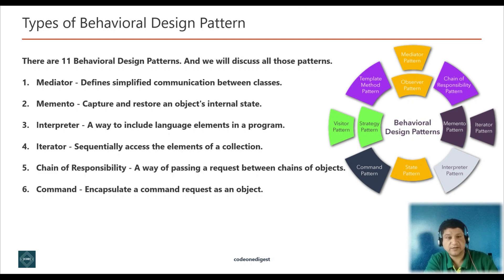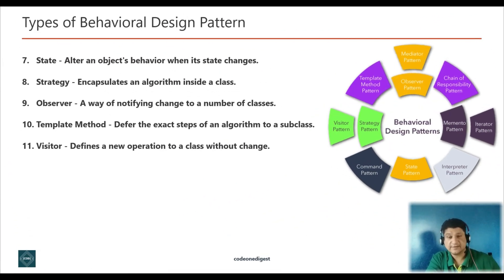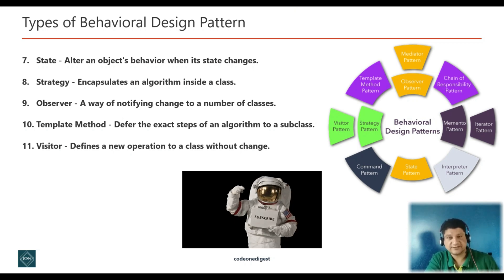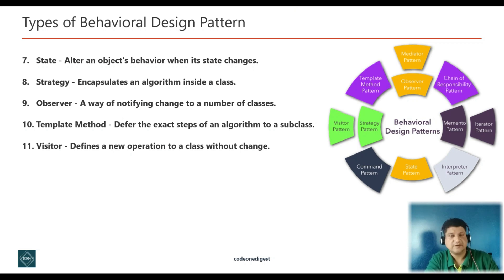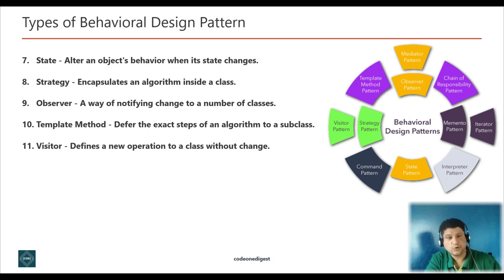Fifth is chain of responsibility, where it provides a way of passing a request between the chain of objects. Sixth is command design pattern, that encapsulates a command request as an object. Seventh is state design pattern — an object alters its behavior when its internal state changes. Eighth is strategy design pattern, where we encapsulate an algorithm inside a class. Ninth is observer design pattern, which provides a way of notifying a change to a number of classes. Tenth is template design pattern, that defers the exact steps of an algorithm to its subclass. And eleventh is visitor design pattern, that defines a new operation to a class without any change.